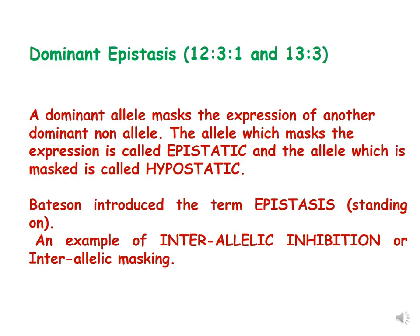The second type of epistasis is dominant epistasis, which has two ratio examples: 12:3:1 and 13:3. In dominant epistasis, we use two additional terms — epistatic and hypostatic. A dominant allele masks the expression of another dominant non-allele; the allele doing the masking is called epistatic, and the allele being masked is called hypostatic.